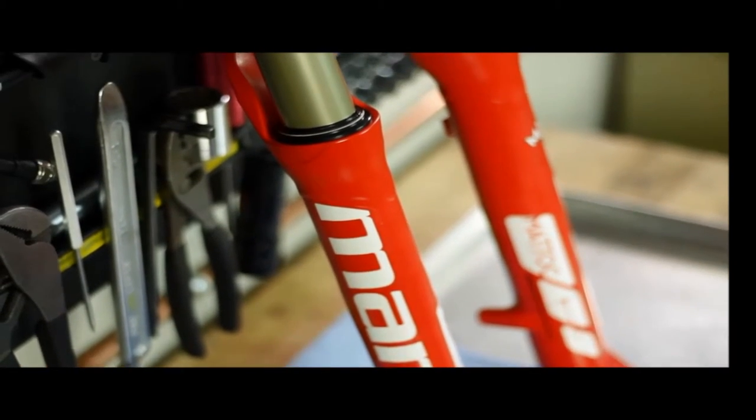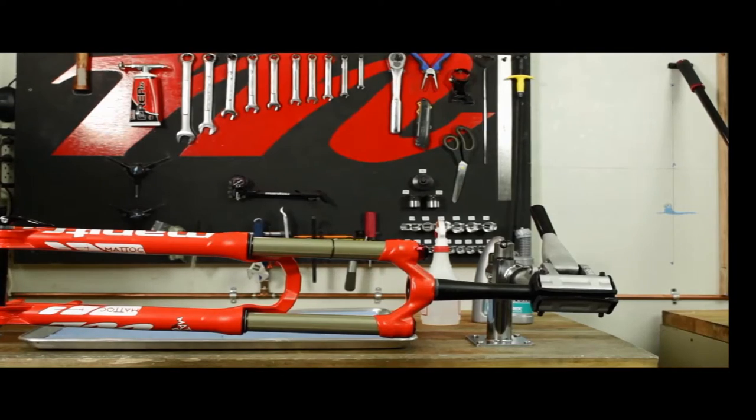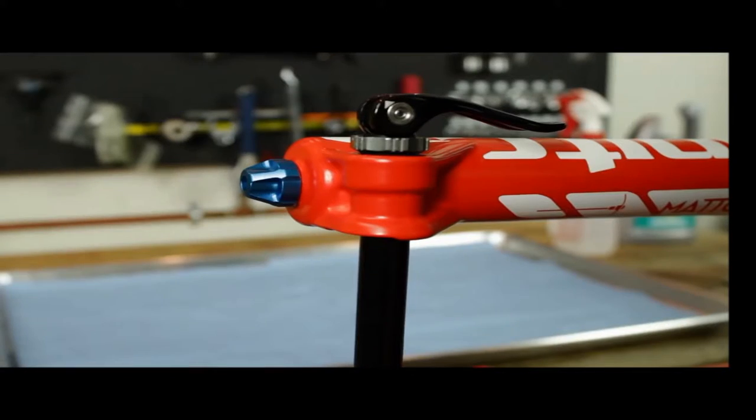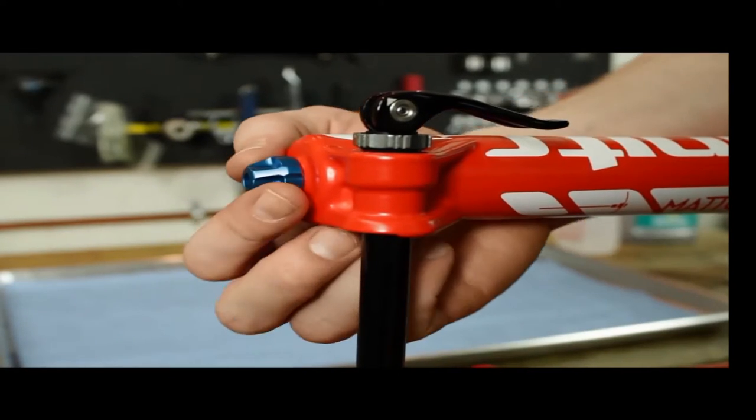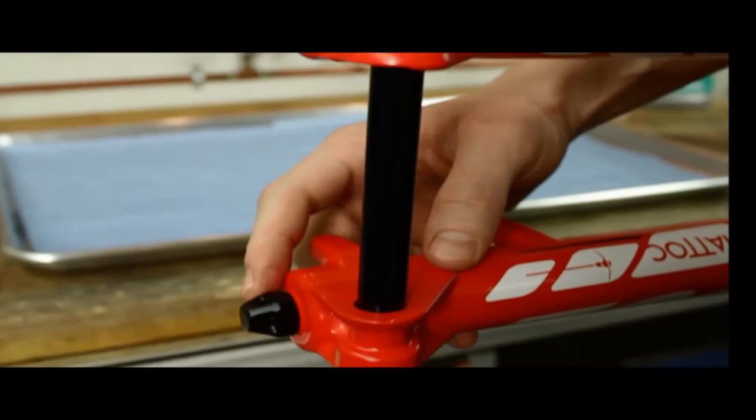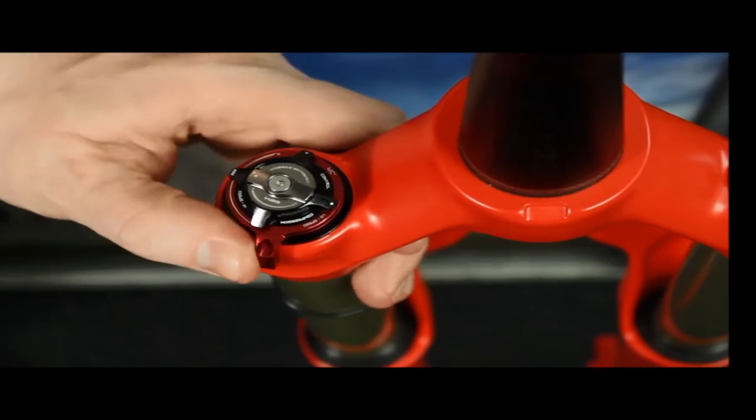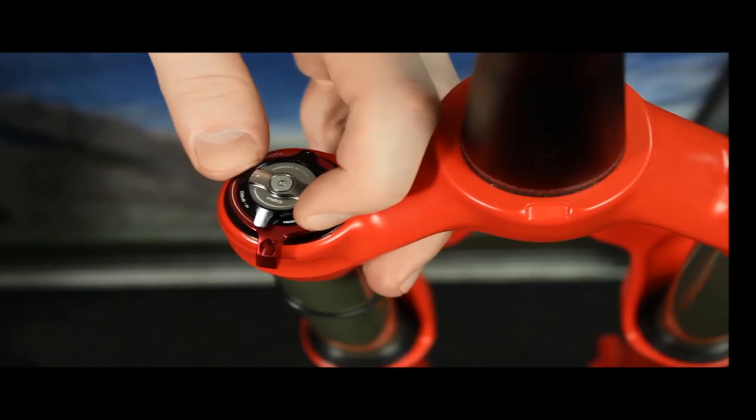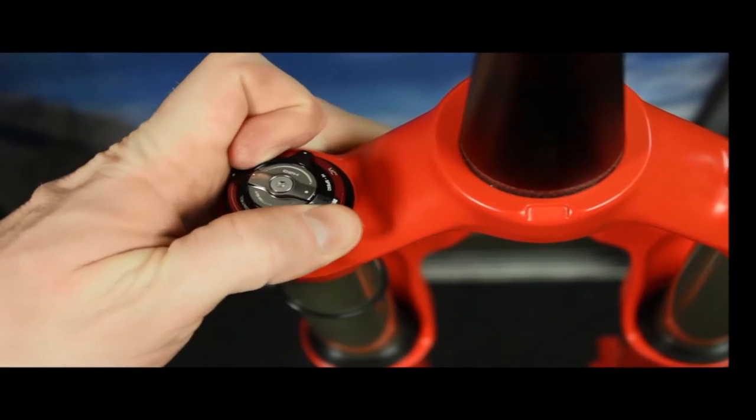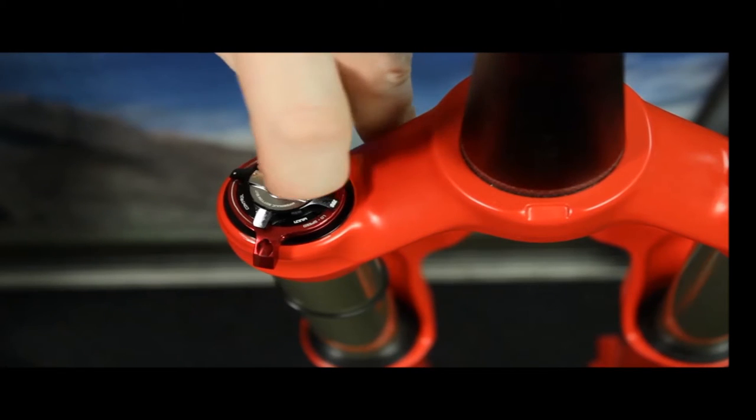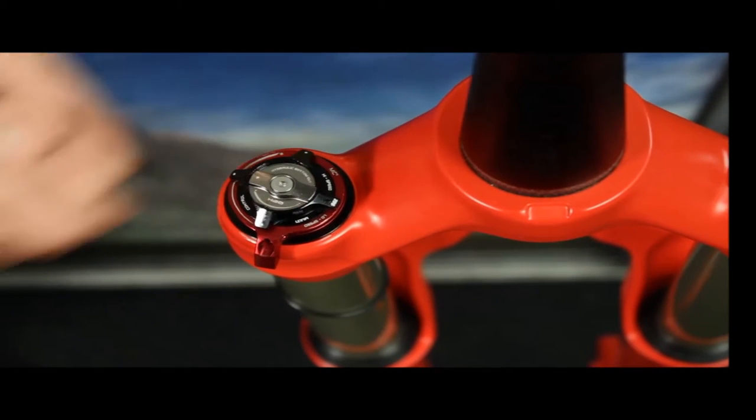To start off, here are the key external components you'll need to know to perform maintenance on your Matic. At the bottom of the Matic in blue is the rebound adjustment knob and in black is the air valve cap. This is the low speed adjustment knob in red. Right above that in black is the high speed adjustment knob. Finally in silver is the hydraulic bottom out adjustment knob.